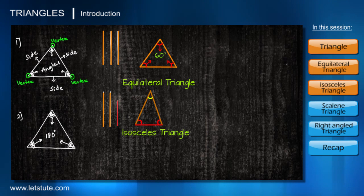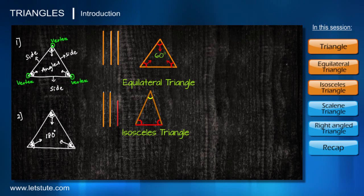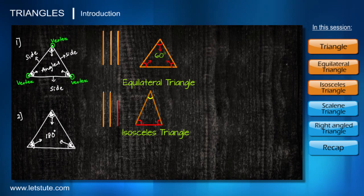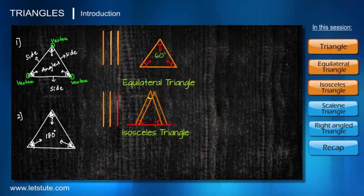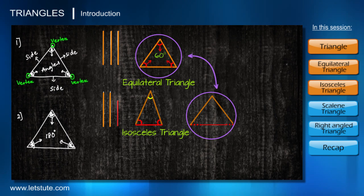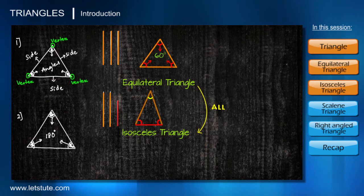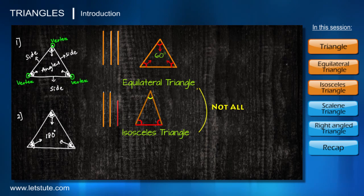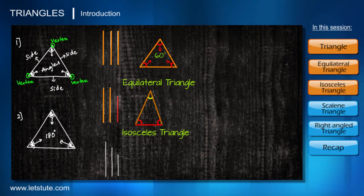We are not talking about the third, unequal side — it may or may not be equal to the other two. If the third side happens to equal the other two, then all three sides become equal and it becomes an equilateral triangle. So from this we understand that all equilateral triangles are isosceles triangles, but not all isosceles triangles are equilateral.